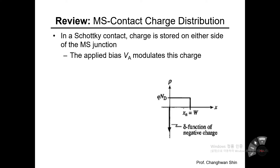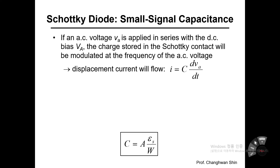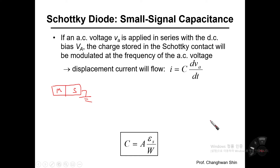If the applied voltage is varying, like an AC signal, the charge across the MS contact would be redistributed. Simply speaking, the electrons and holes in the semiconductor and metal side can move in and out. So in the MS diode, you are going to apply a DC voltage and an AC voltage connected in series.